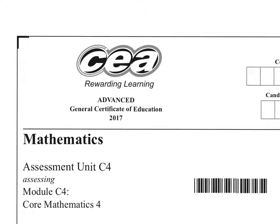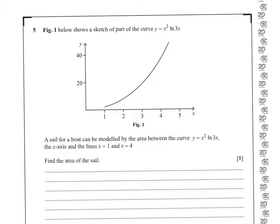C4 2017. Area of the sail will be the integral from 1 to 4 of x squared ln 3x with respect to x.